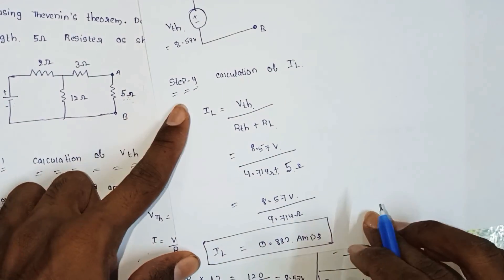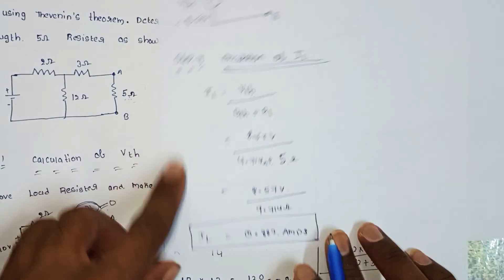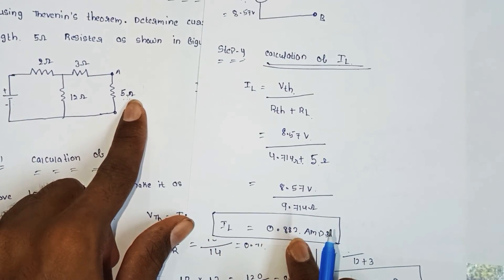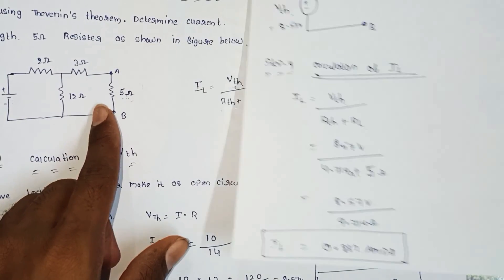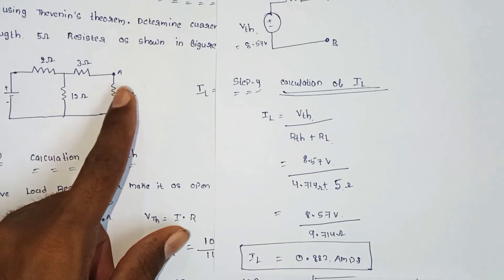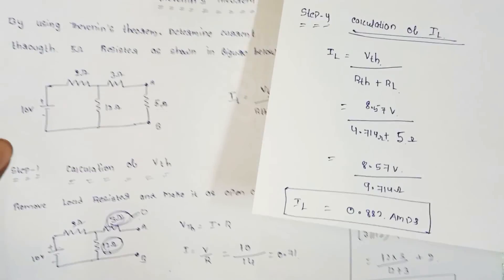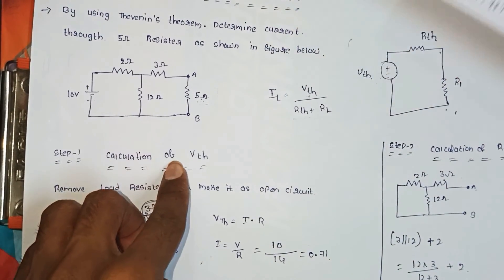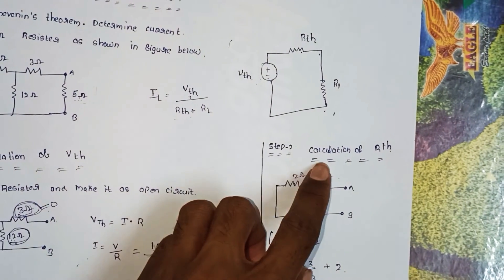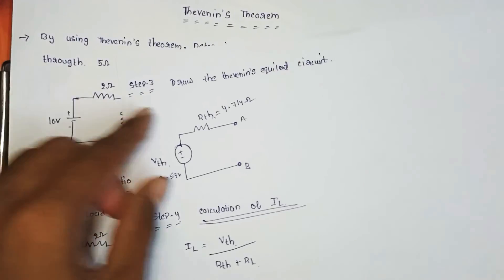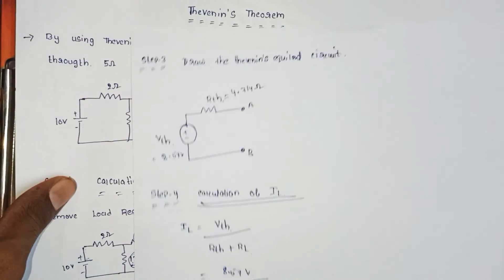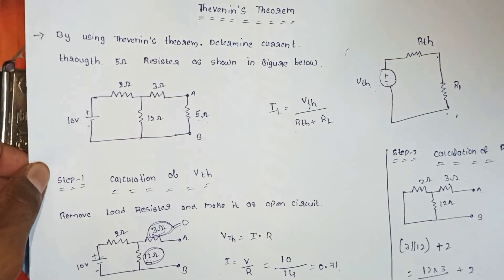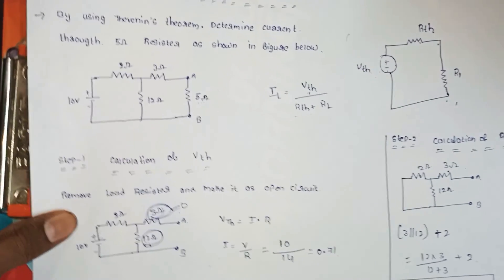So the current passing through the 5-ohm load resistance is 0.882 Amps. This is Thevenin's theorem solved step-wise: Step 1 is calculation of VTH, Step 2 is calculation of RTH, Step 3 is drawing the Thevenin equivalent circuit, and Step 4 is calculation of IL. This is the simple model of Thevenin's theorem.